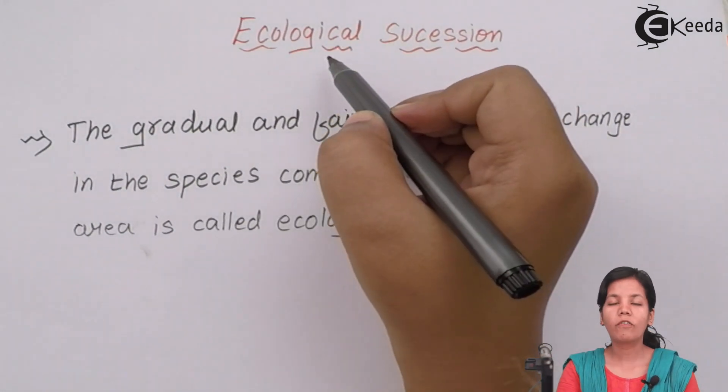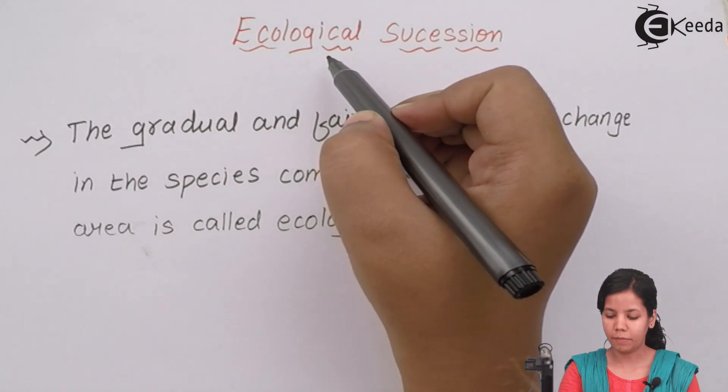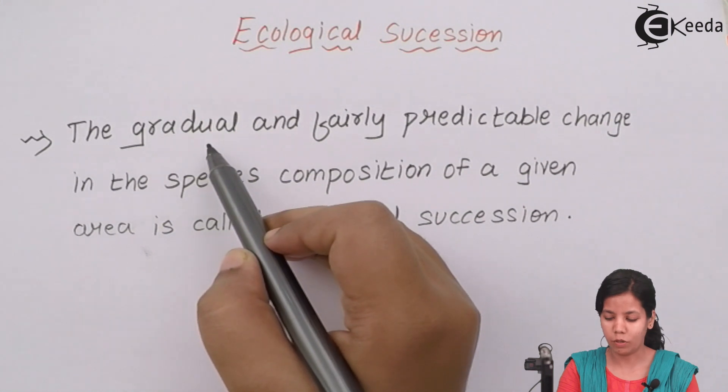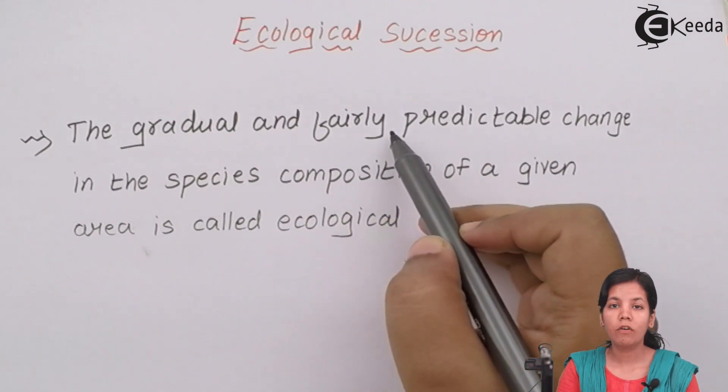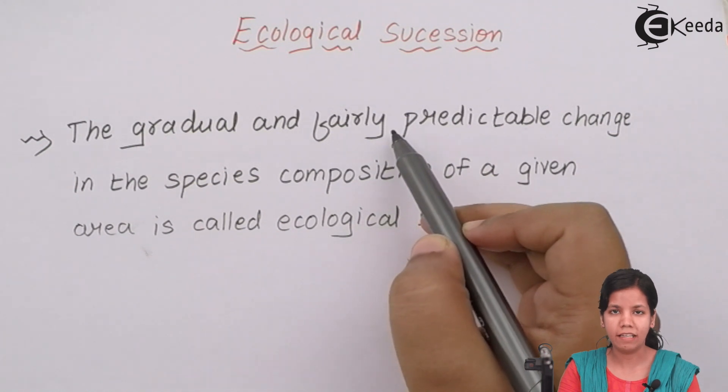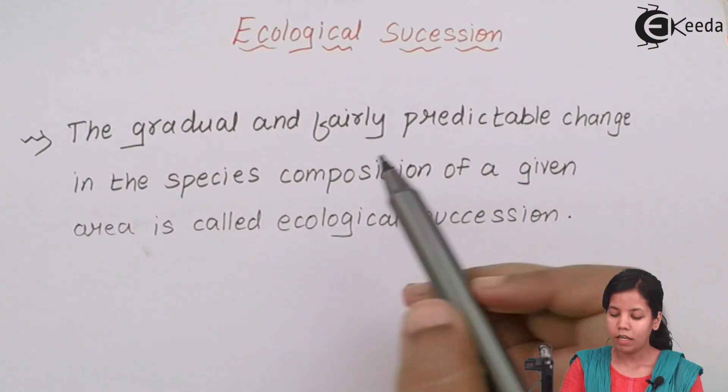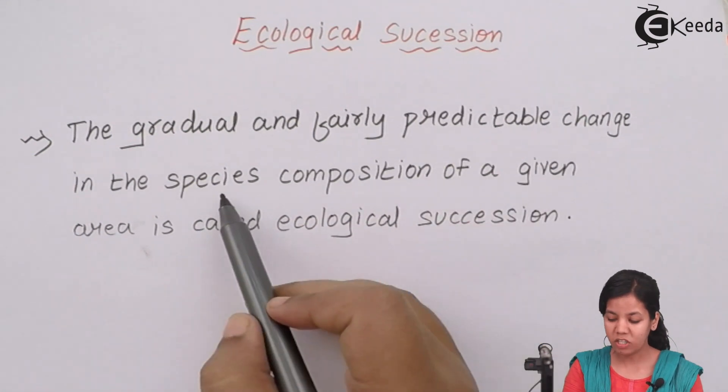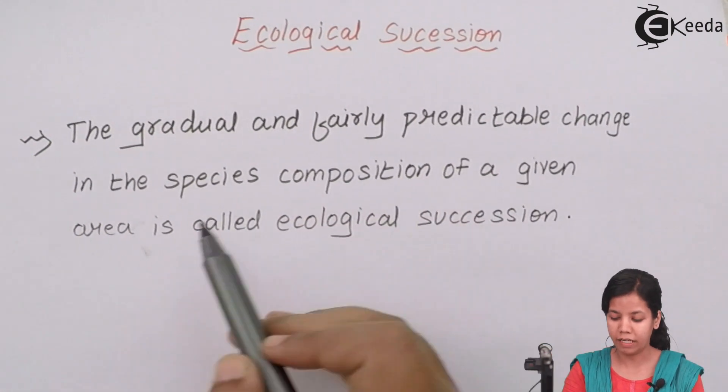The definition of ecological succession is, it is a gradual, it means a slow change, it will take time of its own and fairly predictable change. For example, if there are trees which are coming slowly on a desertic ground, you can predict that after few months there will be a lot of trees on that desertic ground. So ecological succession is a gradual and fairly predictable change in the species composition of a given area.